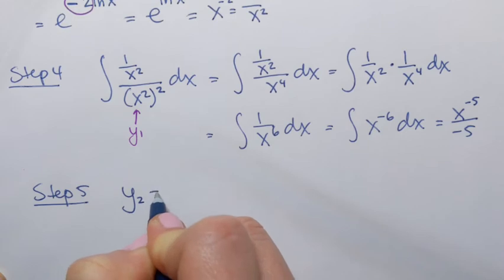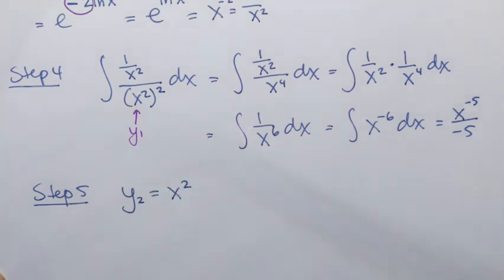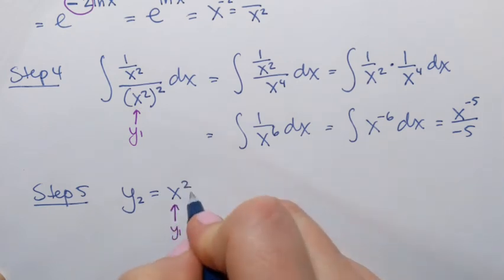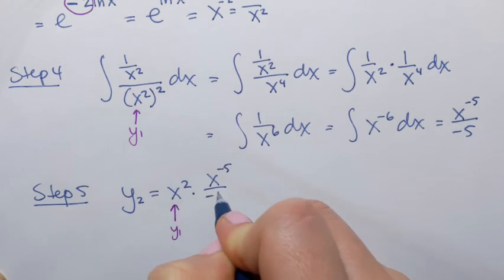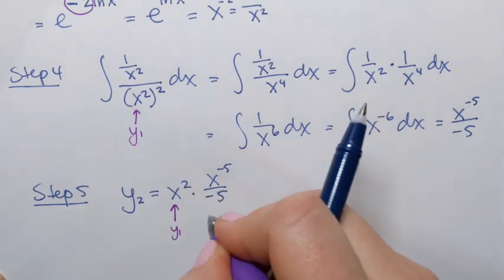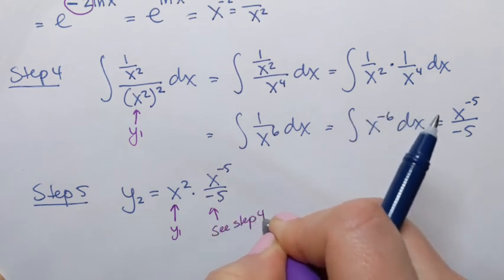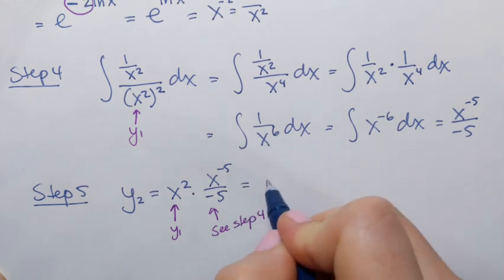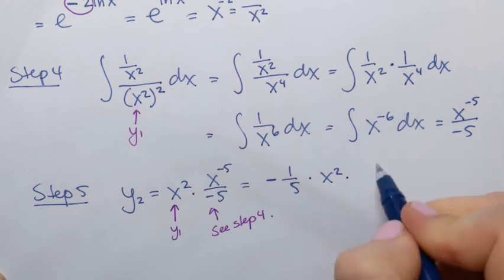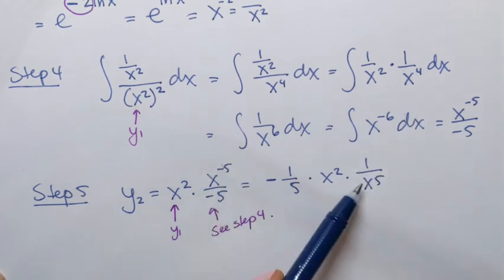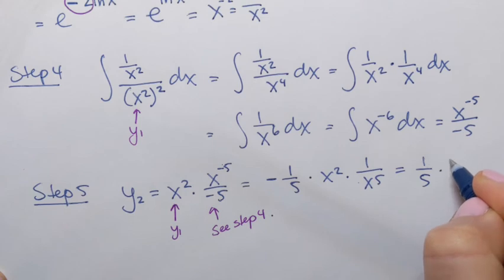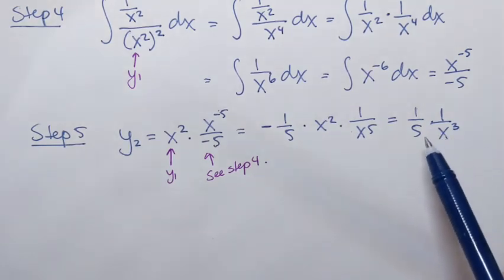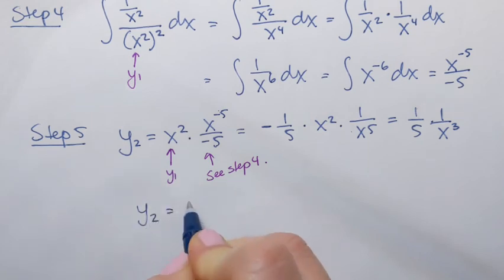Step 5: y2 equals y1 times the result from step 4. So y2 equals x squared times x to the negative 5 over negative 5. That simplifies to negative 1 over 5 times x squared times 1 over x to the 5th power, which equals negative 1 over 5 times 1 over x cubed. Since this is a homogeneous differential equation, we can ignore the constant factor, so the second solution is simply y2 equals 1 over x cubed.